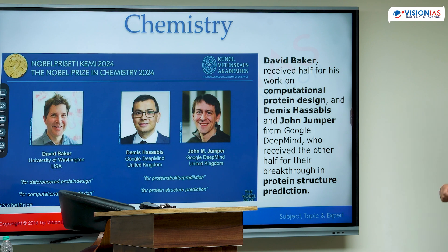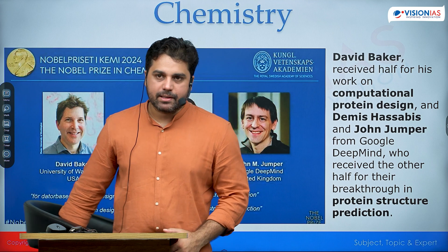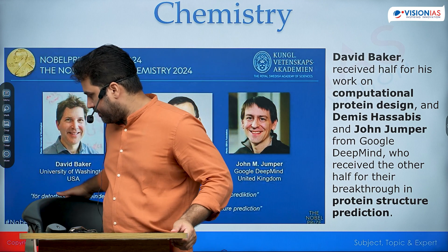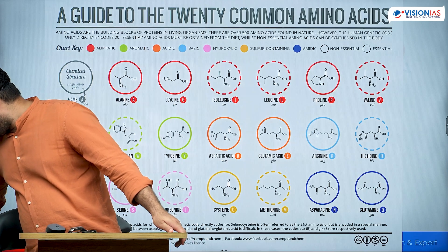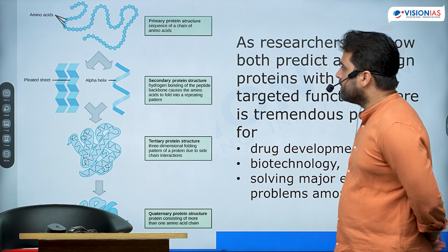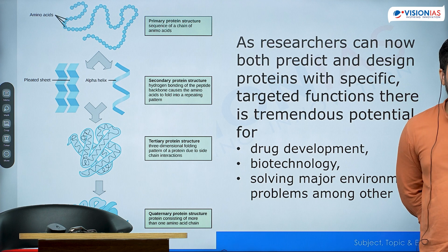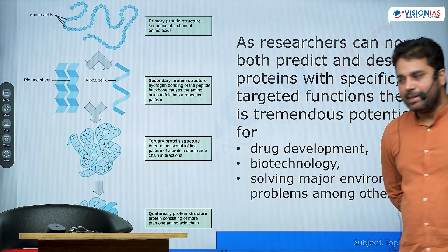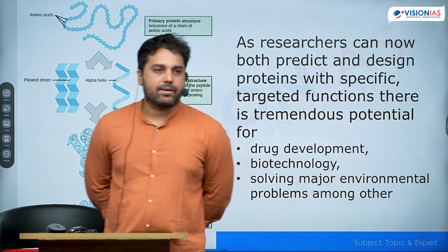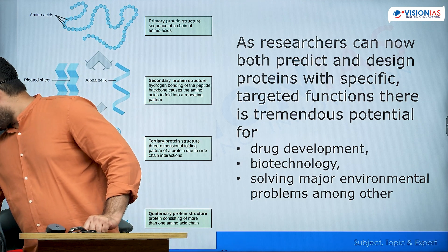Coming back to what we discussed in the very first topic — the role of protein. As I said in the very first topic, proteins are very complex molecules. There are groups of molecules we call amino acids. The amino acid functional group is NH2. We can have many types of amino acids, but all the proteins made inside living organisms are only made of 20 specific amino acids.